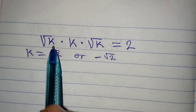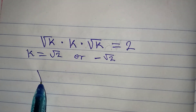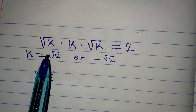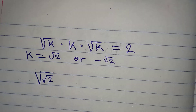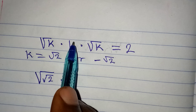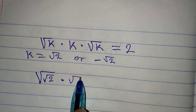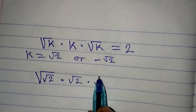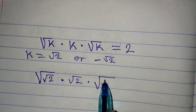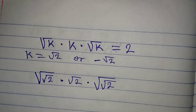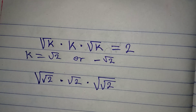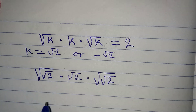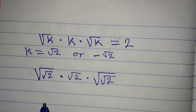If I put root 2 into the equation, I get square root of (square root of 2), multiplied by k which is root 2, then multiplied by square root of (square root of 2). Will this give me 2 at the end? Let's find out.